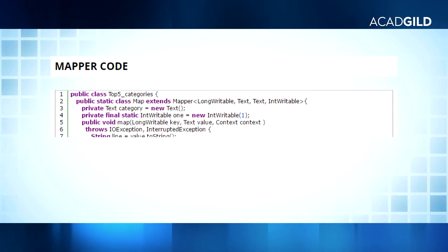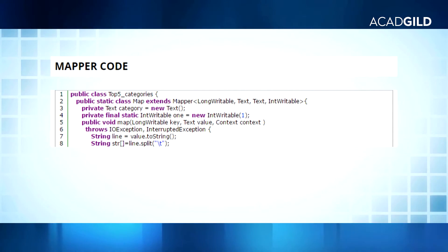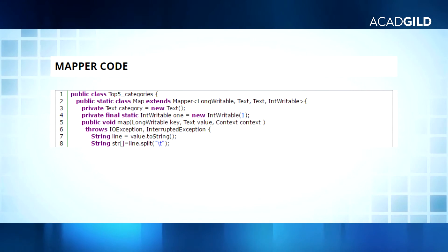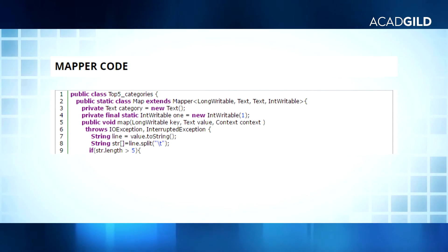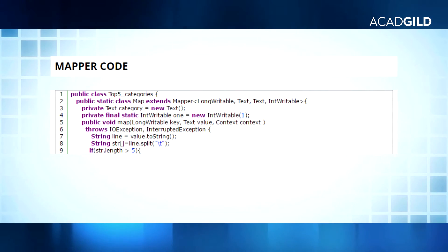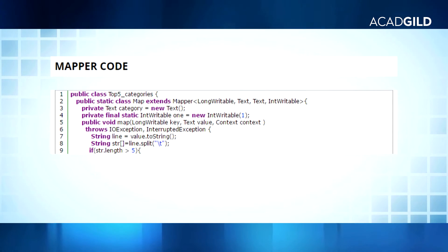In line 7, we are storing the line in a String variable called line. In line 8, we are splitting the line by using the backslash-t delimiter and storing the values in a String array so that all the columns in a row are stored in it. In line 9, we are taking an if condition: if we have a String array of length greater than 6 — meaning the row has at least 7 columns — then it will enter the if block to eliminate the ArrayIndexOutOfBoundsException.